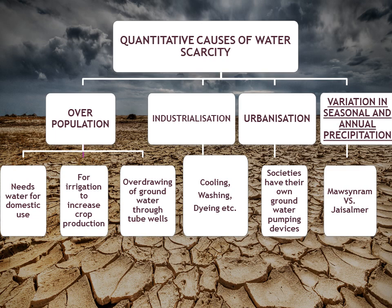Urbanization is the next cause. Urbanization means when people shift from rural areas to urban areas, i.e., from villages to cities. In cities, people in societies have pumping devices installed which also overdraw groundwater. Additionally, there are many extra needs only in cities — washing your car, cleaning your balcony, washing roads, and many more. Next is variation in seasonal and annual precipitation: if there is no rainfall, then of course there will be a water shortage. For example, Mawsynram in Meghalaya is the wettest place in the world with the highest rainfall, while Jaisalmer receives very little rain and faces severe drought.